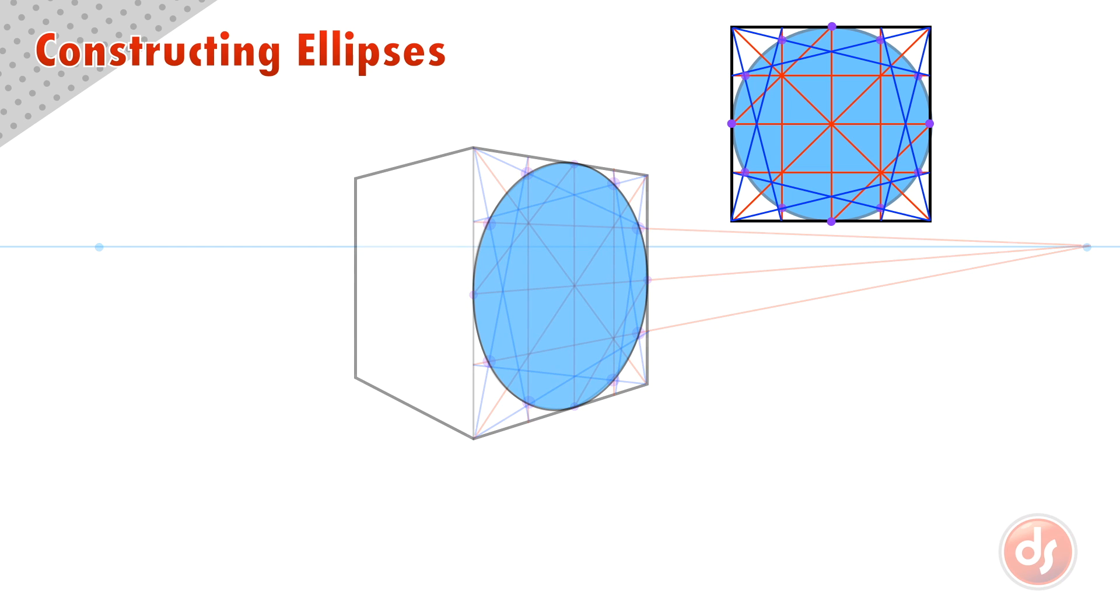Like before, we can check the ellipse by using the major and minor axis. If they are tipped, and the minor axis goes to the center point of the ellipse in perspective, and aims at the opposite vanishing point, then it is correct.